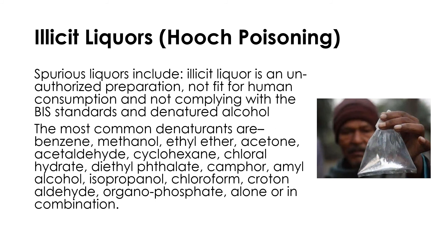Examples of chemicals generally used to prepare illicit liquors include benzene, methanol, ethyl ether, acetone, acetaldehyde, taolin, camphor, amyl alcohol, cyclohexane, isopropanol, croton aldehyde, organophosphate, and many others. These chemicals are mixed with country-made alcohol to get a high yield.